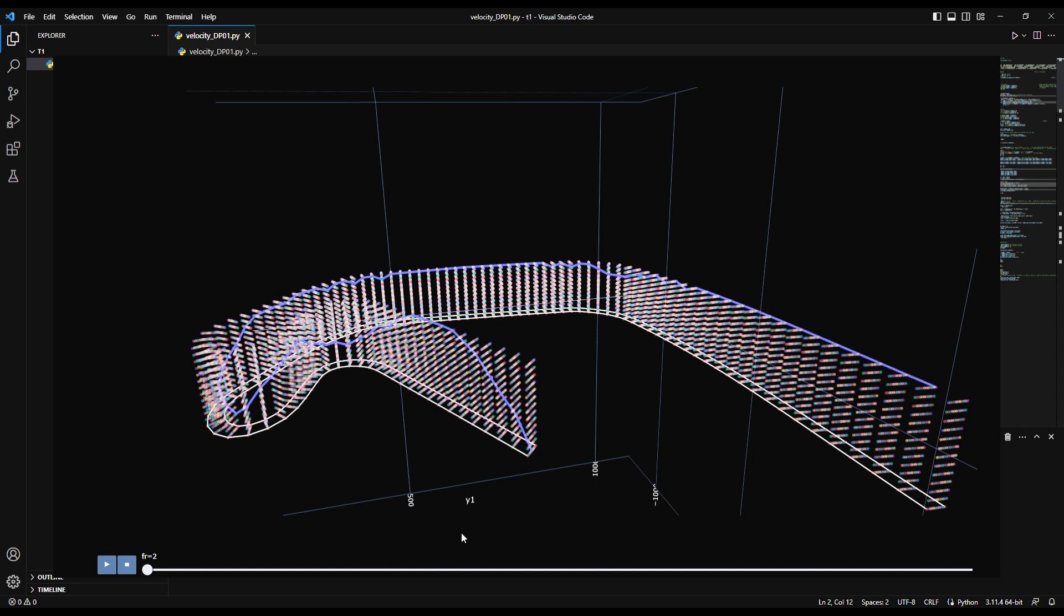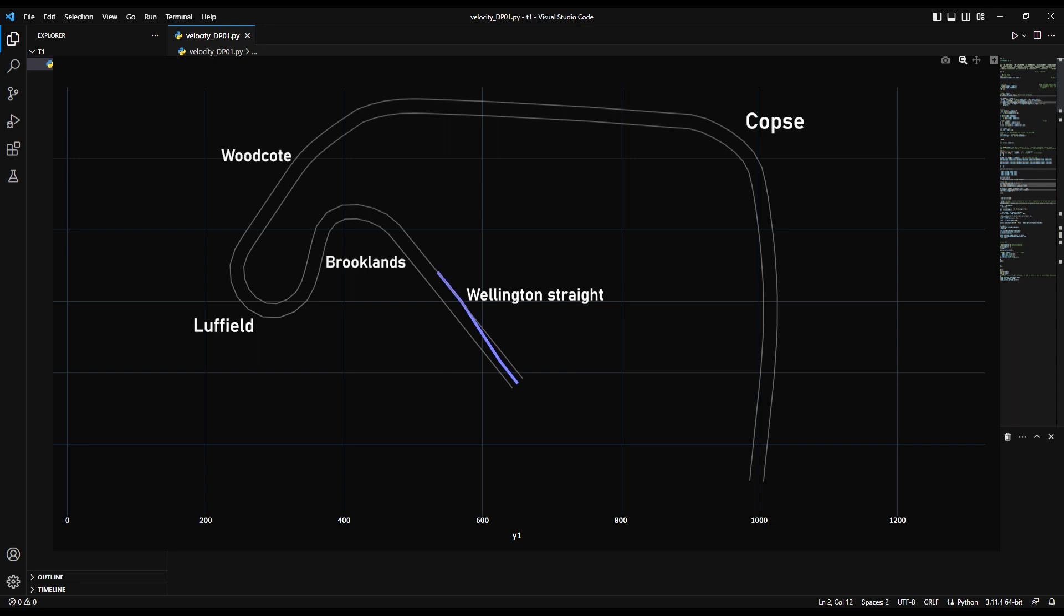There you have it, the fastest racing line through the Copse corner determined using numerical dynamic programming. Please hit the subscribe button if you found value in this video. See you next time, thank you.